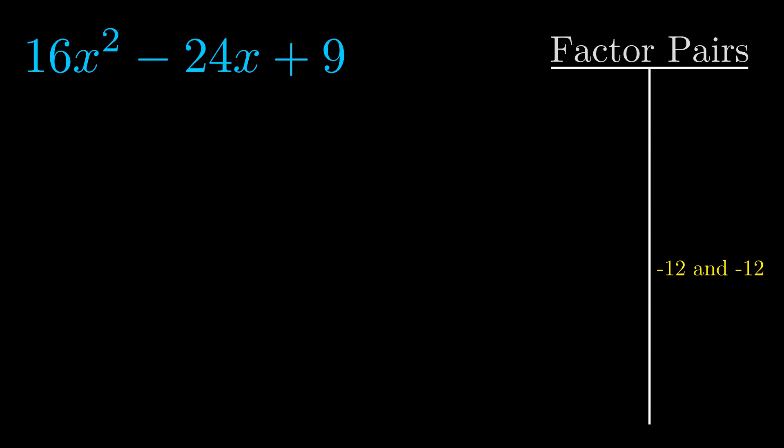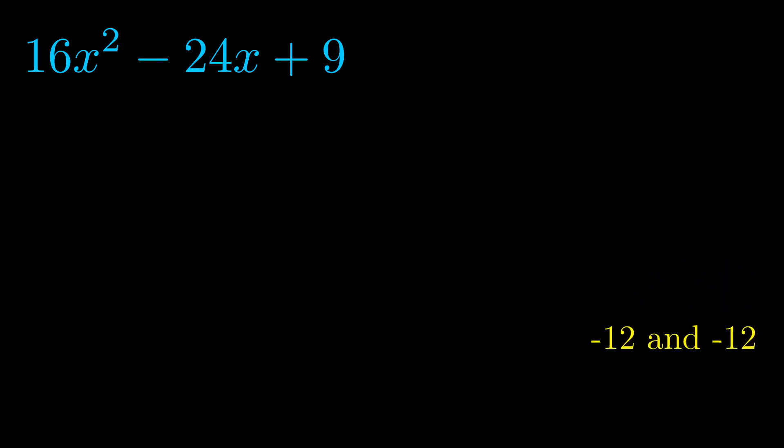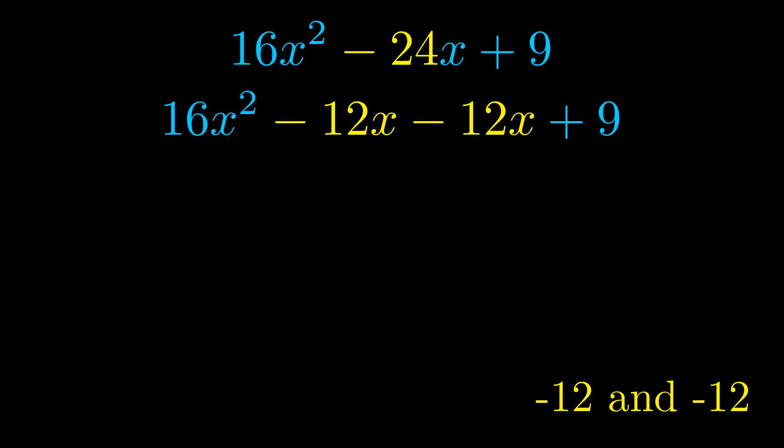Now once we have this factor pair, what we want to do is use it to split up the b value. Notice how I'm going to keep my first term and my last term completely unchanged. It is only this b term highlighted in yellow that gets expanded into this correct factor pair.